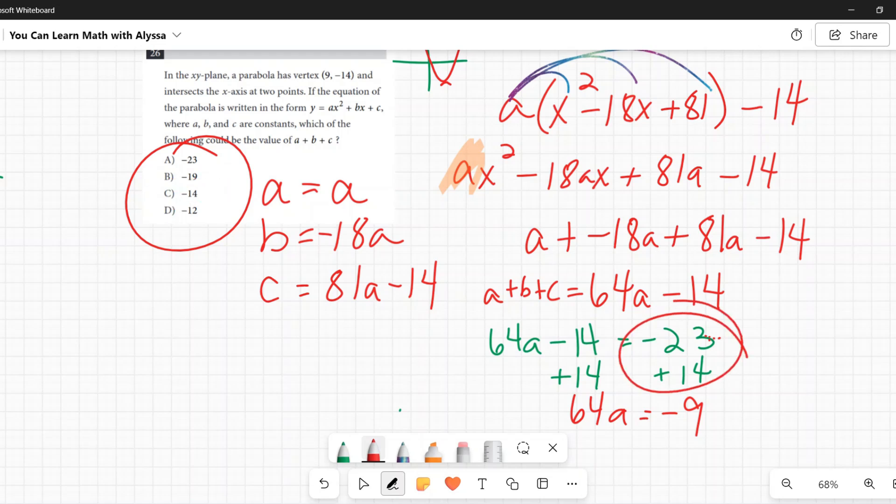And I need a to be a positive number. If zero is up here, this parabola doesn't exist because it would be zero X squared. That's not a parabola. You know, we'd have a line like, no, it's a parabola.